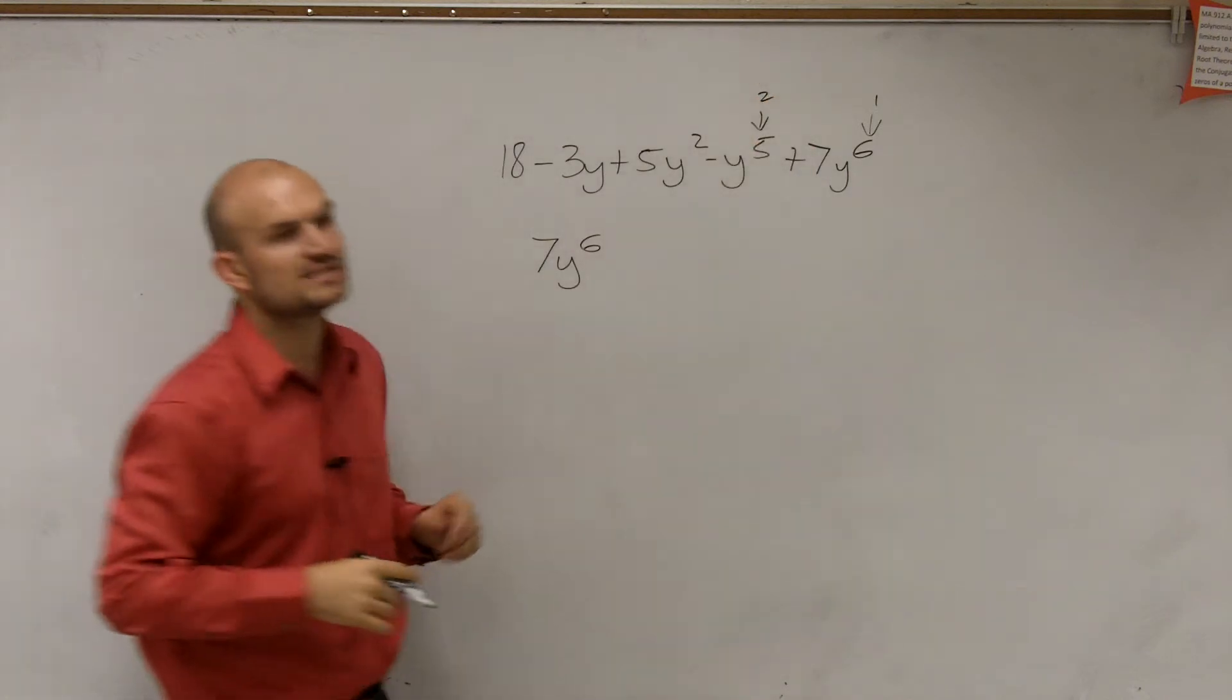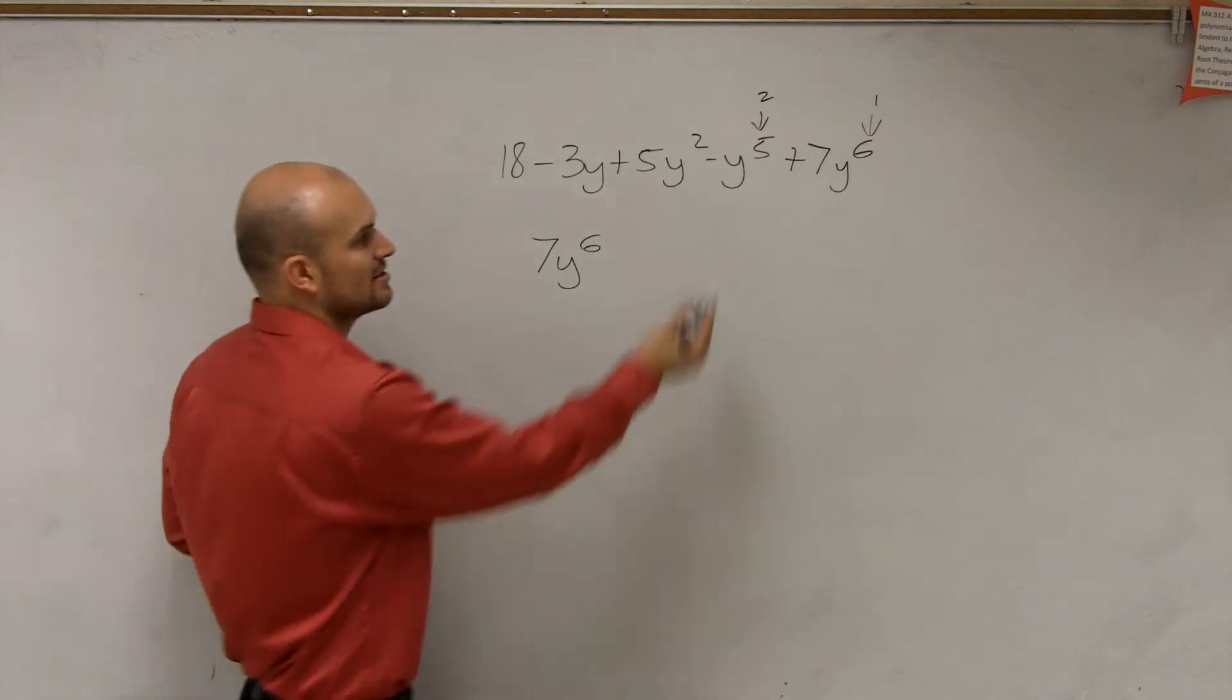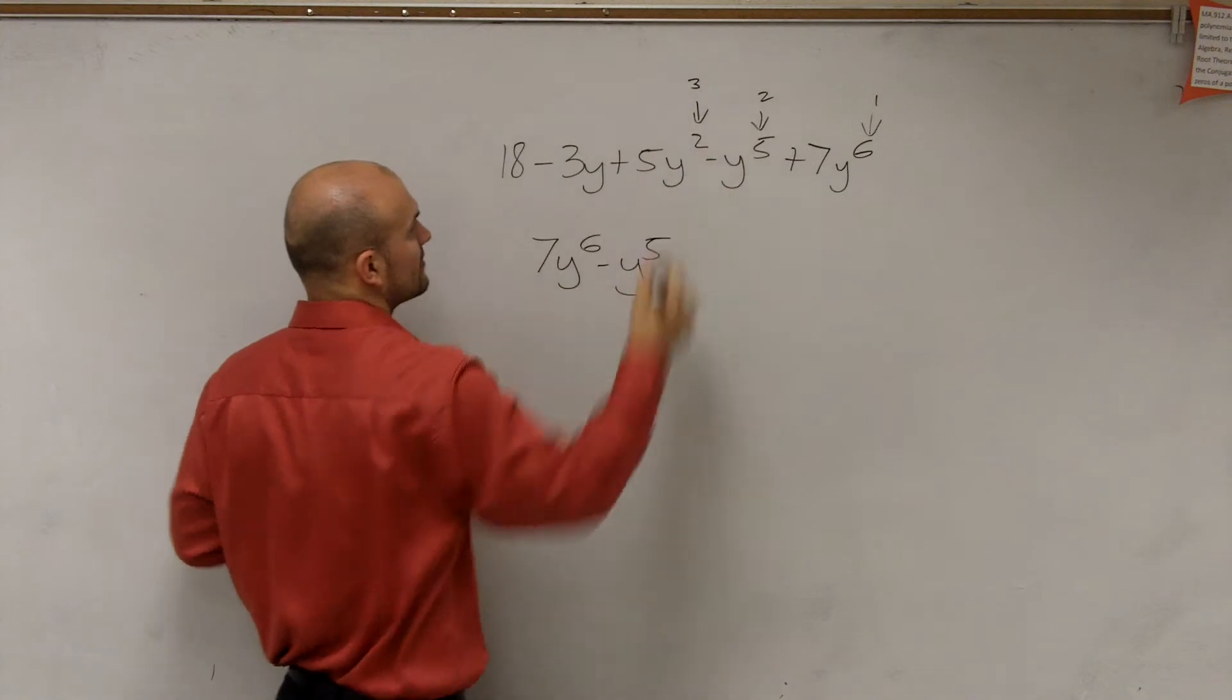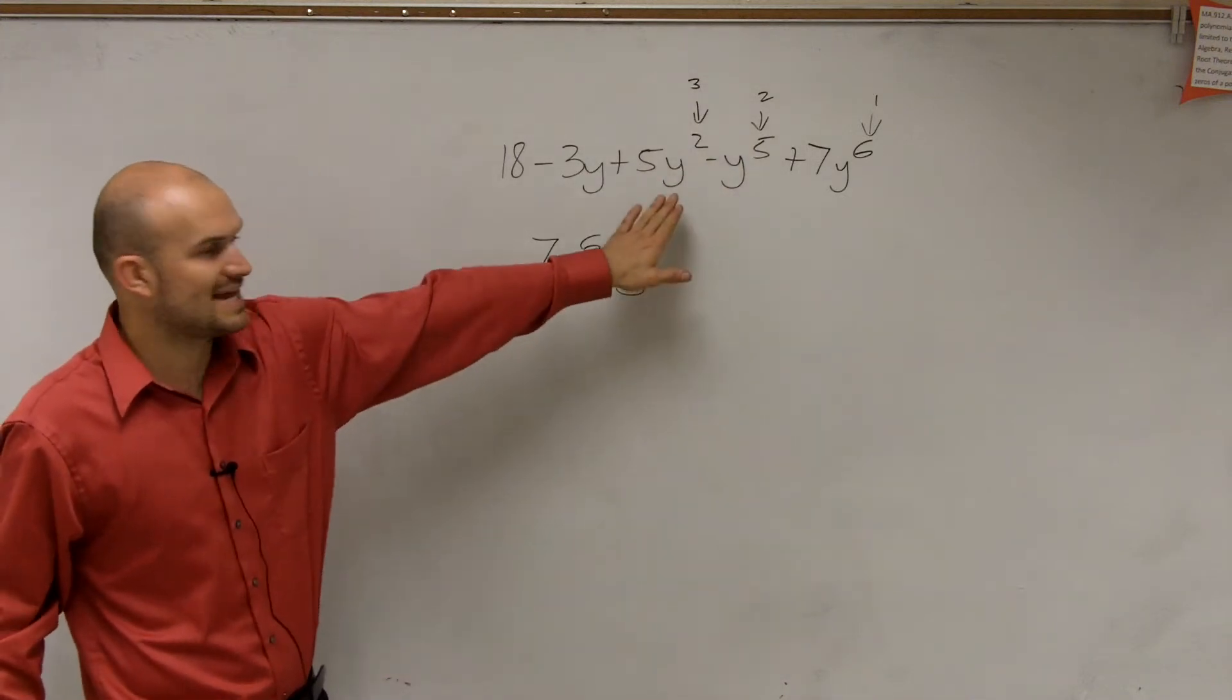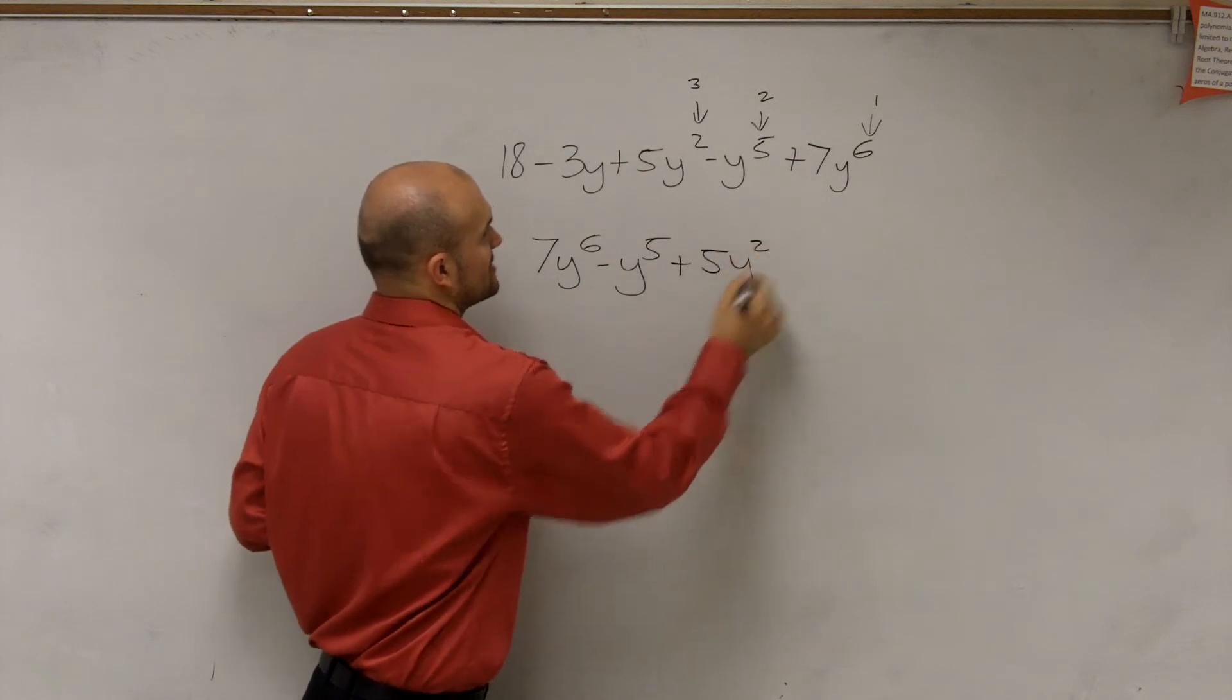largest degree is 5. So we now take that whole monomial and write that next, which is negative y to the fifth. Then the next highest degree is my y squared, so I take that whole monomial, which is plus 5y squared.